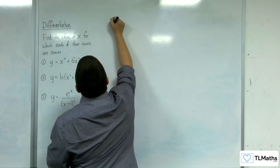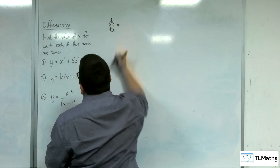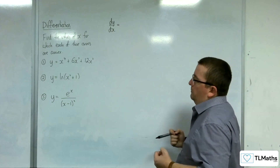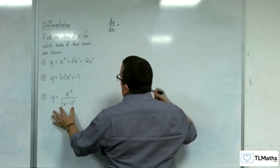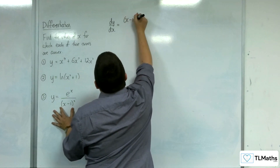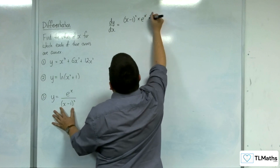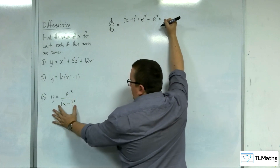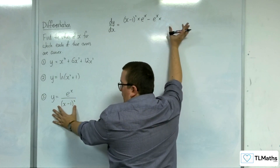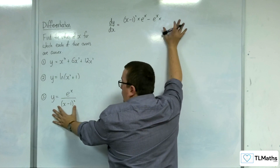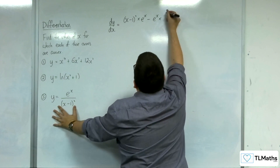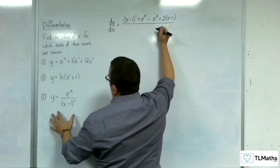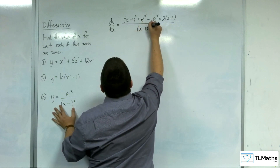Number 3: in order to differentiate this, I'm going to use the quotient rule. We've got the bottom, (x − 1)², times by the derivative of the top, which is eˣ, take away the top eˣ times by the derivative of the bottom. To differentiate (x − 1)², using the chain rule, that gives 2(x − 1). All over the bottom squared, so (x − 1) to the 4.